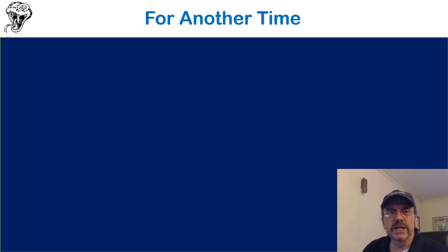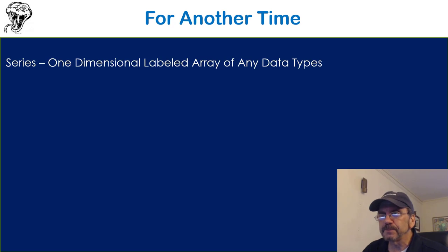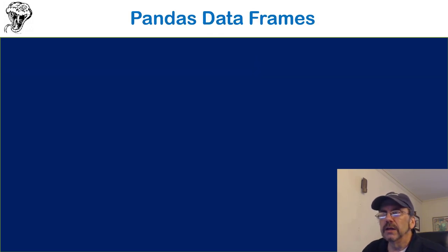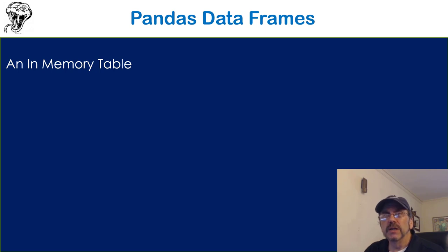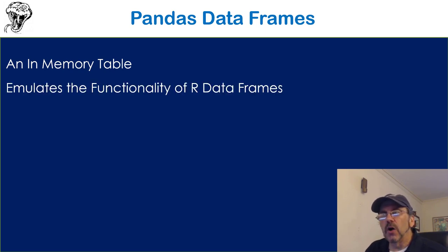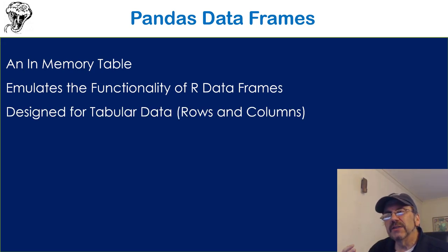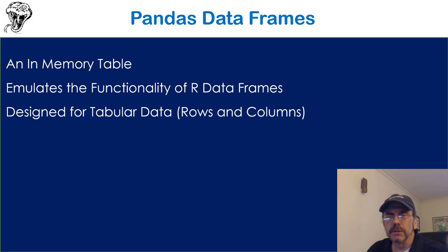We're not going to be talking about series — one-dimensional labeled arrays — or NumPy arrays directly. We'll be implicitly using NumPy, but through Pandas. What we are going to talk about is data frames. The easiest way to think about a data frame: if you think of a SQL database table, imagine you query that table and bring it into memory. That's how I think of it — it's an in-memory table. It's tabular data: rows and columns — name, address, zip code, purchase amounts.